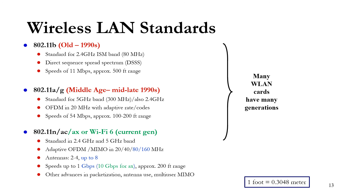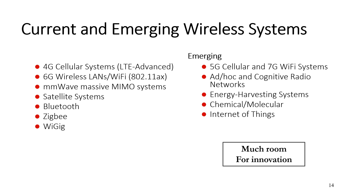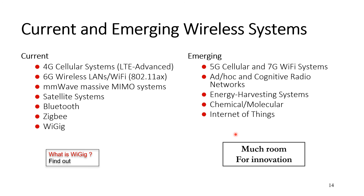This was just an example of standardization. In coming videos we'll cover current technologies including 4G wireless systems, 6G challenges, Bluetooth, satellite systems, Zigbee, WiGig, and emerging technologies such as 5G cellular and 7G Wi-Fi systems, ad hoc networks, and energy harvesting. Please stay connected with us and leave your comments and suggestions. Hopefully we'll address them. Thank you for being good listeners.